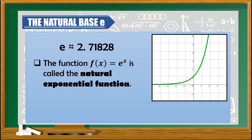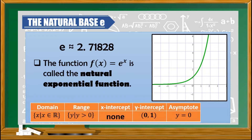Looking at the graph of f of x is equal to e raised to the power of x, it has the following properties: the domain is the set of real numbers; the range is y greater than zero; the x-intercept is none since the graph did not touch the x-axis; the y-intercept is at (0, 1); and the asymptote is y equals zero.